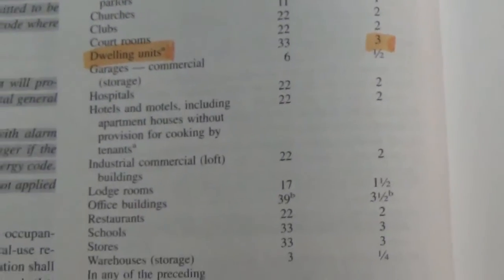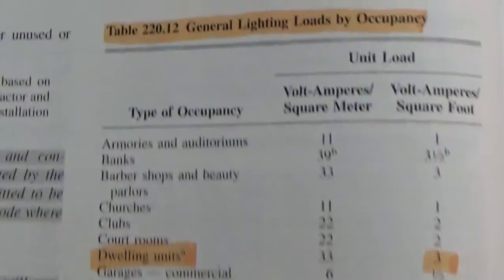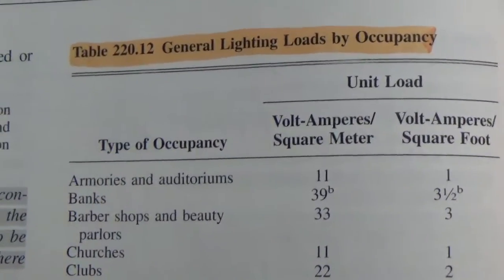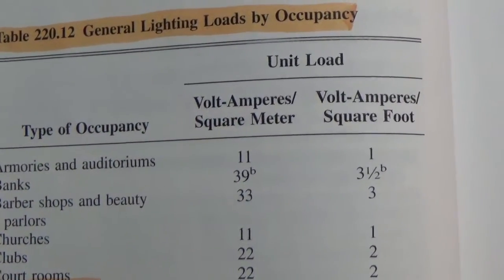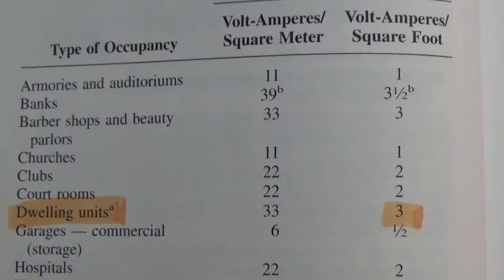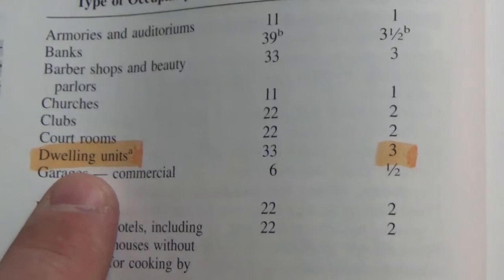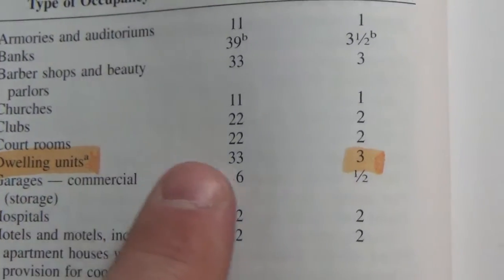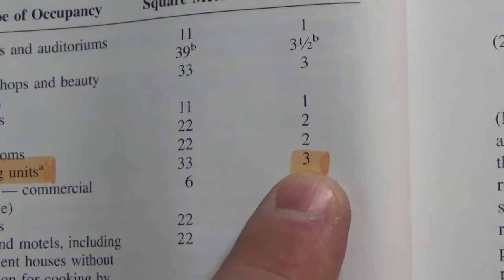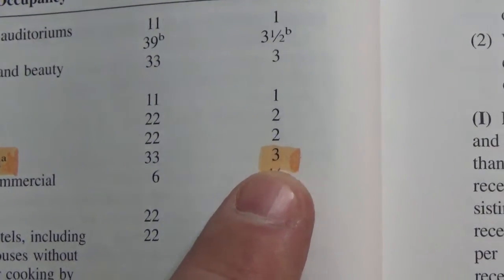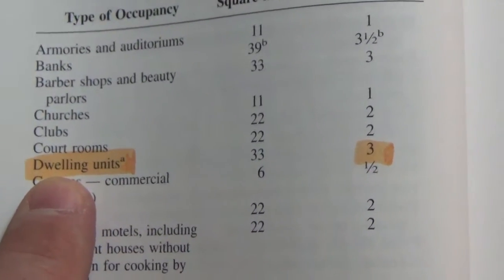It gives us a whole list of different occupancies. What we're looking at is volt amps per square meter and volt amps per square foot. We're going to focus on the per square foot. So we're going to go down and find dwelling, and the dwelling unit we follow all the way over. We're going to multiply our square footage by 3. 3 VA is the number that we use for a dwelling unit.